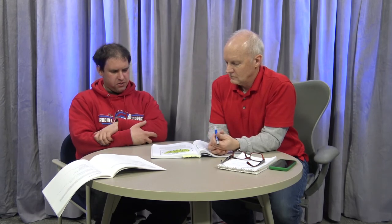Because different amounts of solar heating cause different air temperatures, and warmer air is less dense and tends to rise while cooler air sinks, you get areas of lower and higher pressure. Figure 5-7 shows two low pressure centers near the middle of the country and two high pressure centers — one near the Rockies and one near the east coast. Air is rising at the low pressure centers and sinking at the high pressure centers.